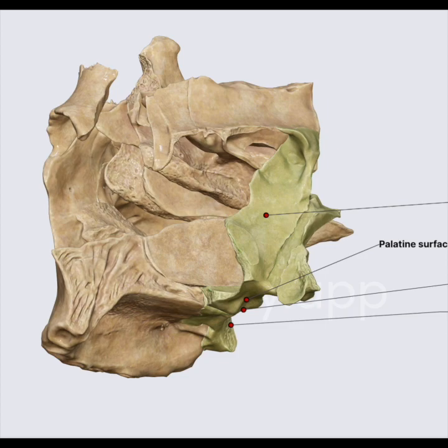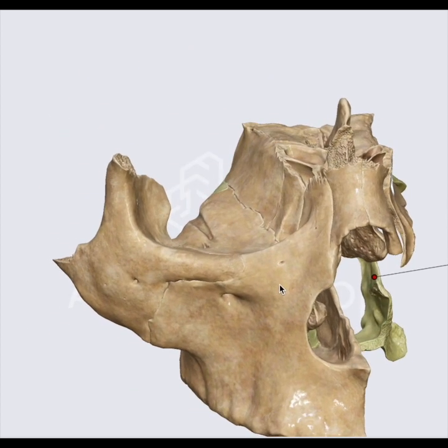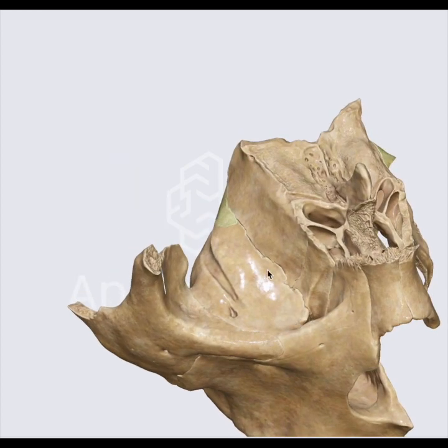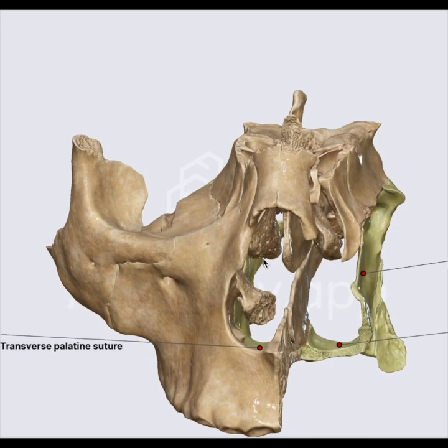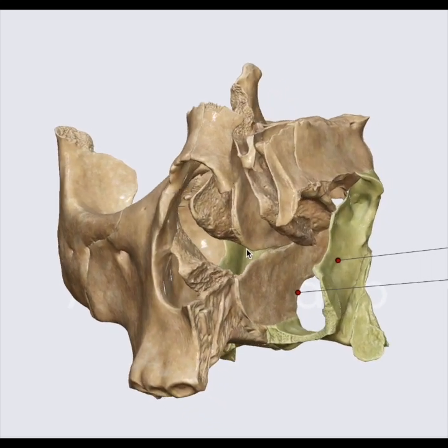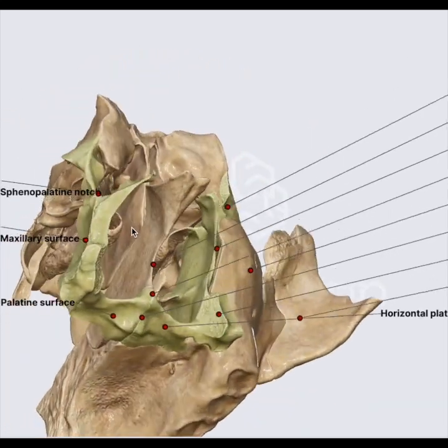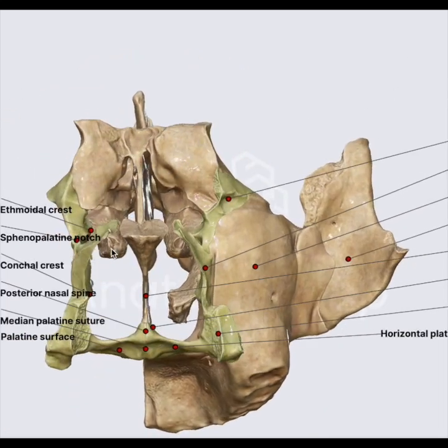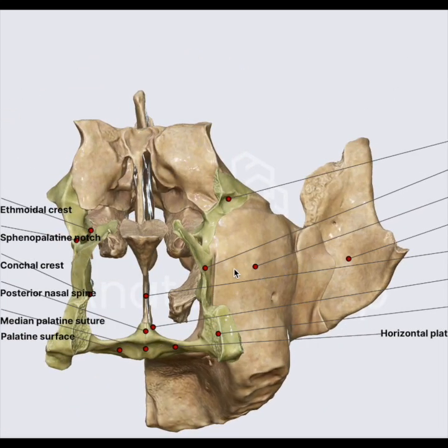Moreover, the palatine bone also contributes to the structural framework of the inferior orbital fissure — that's over here — and the pterygopalatine and pterygoid fossa, which will be behind over here.